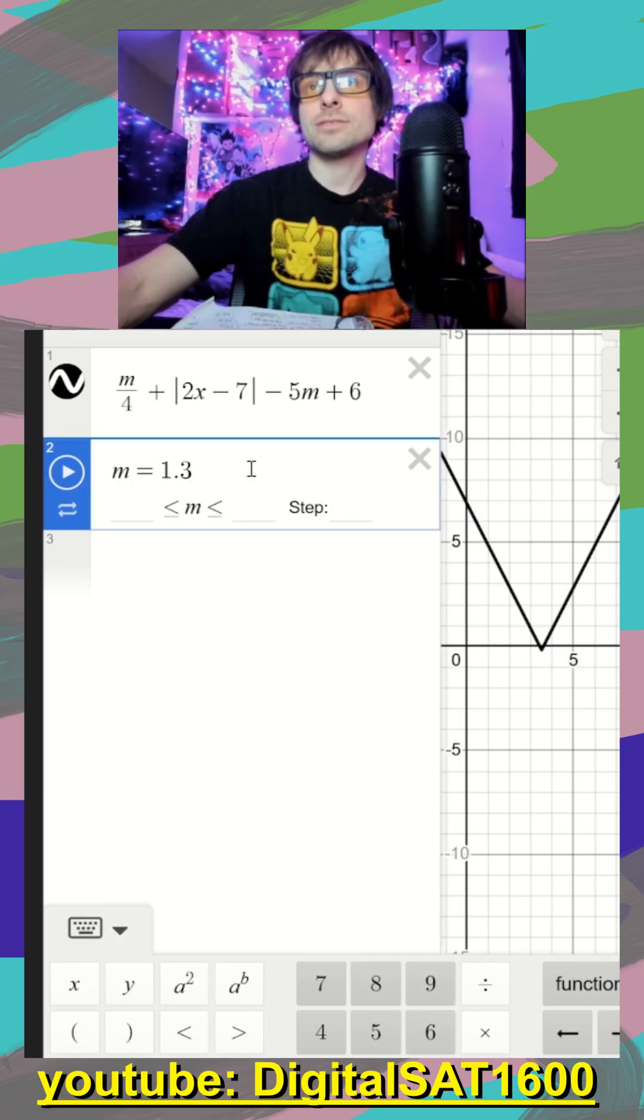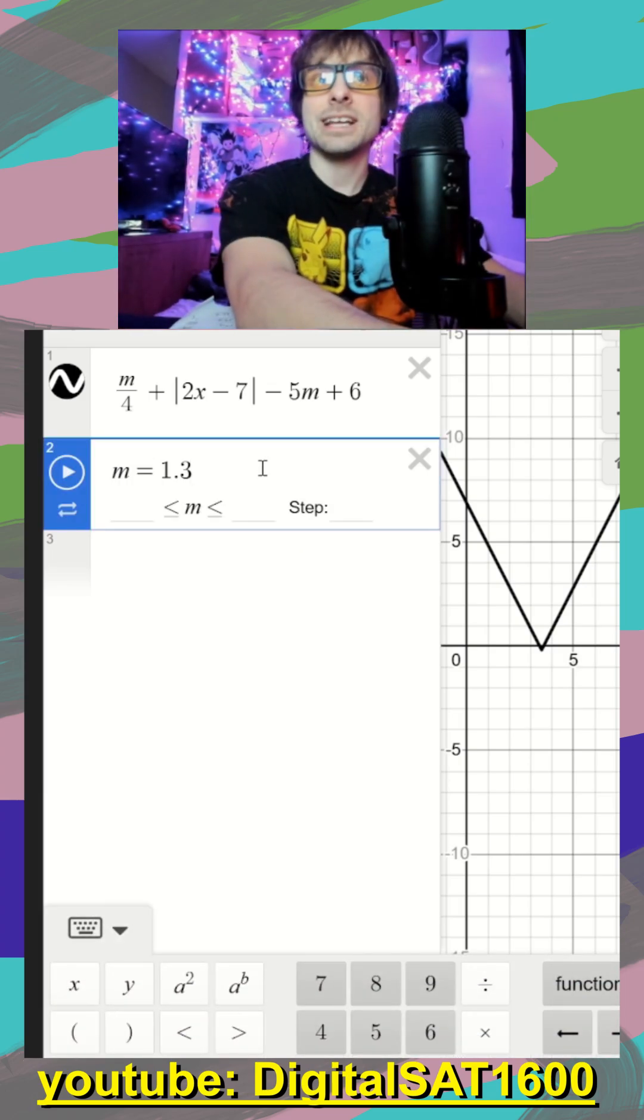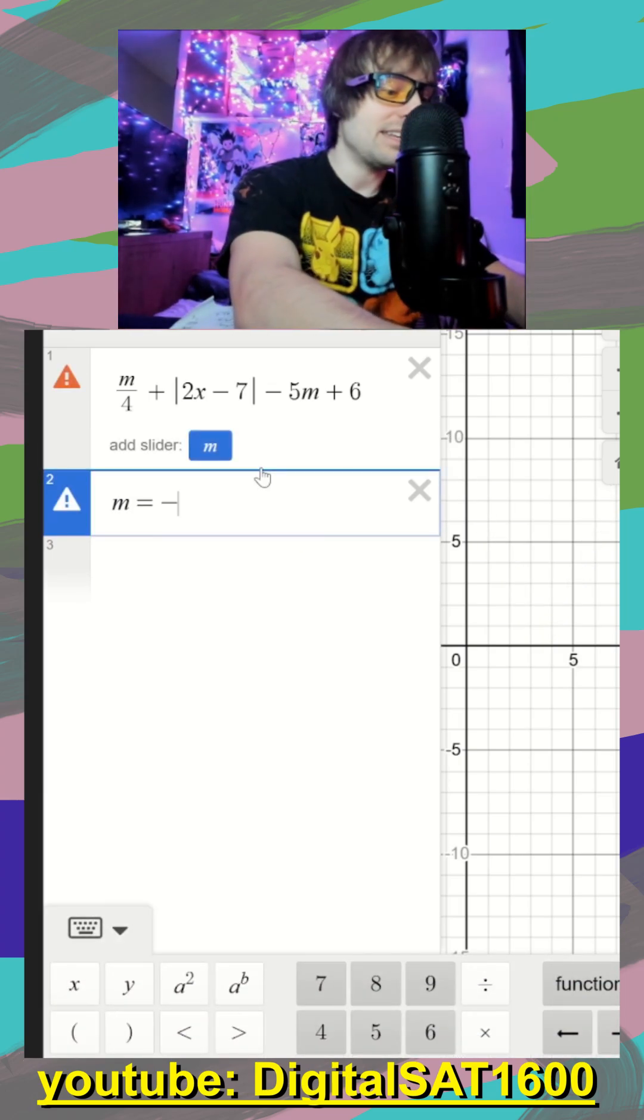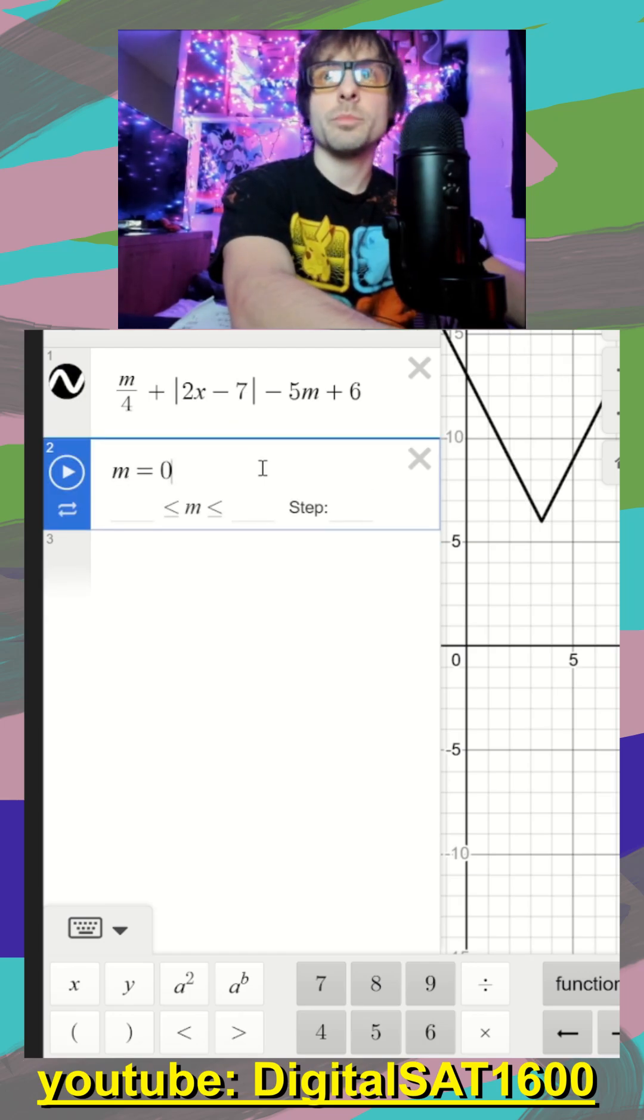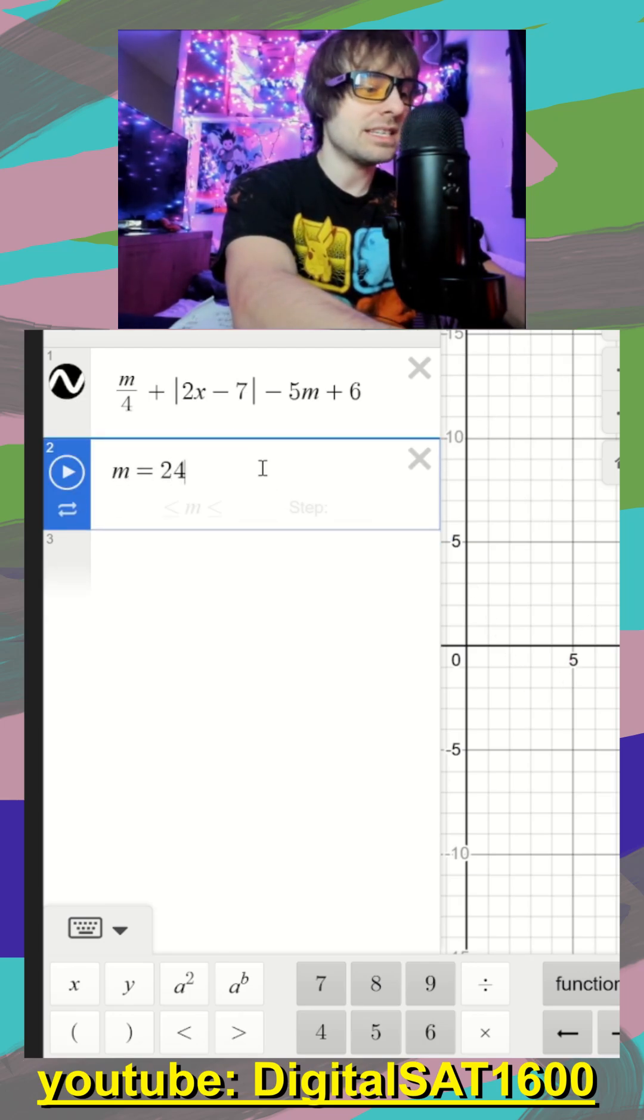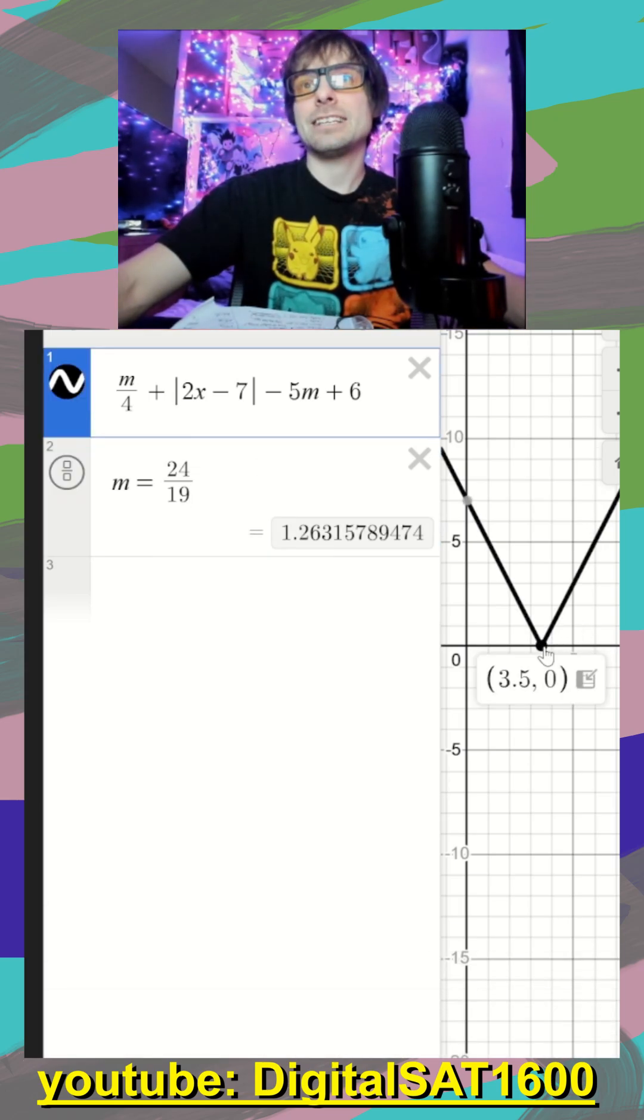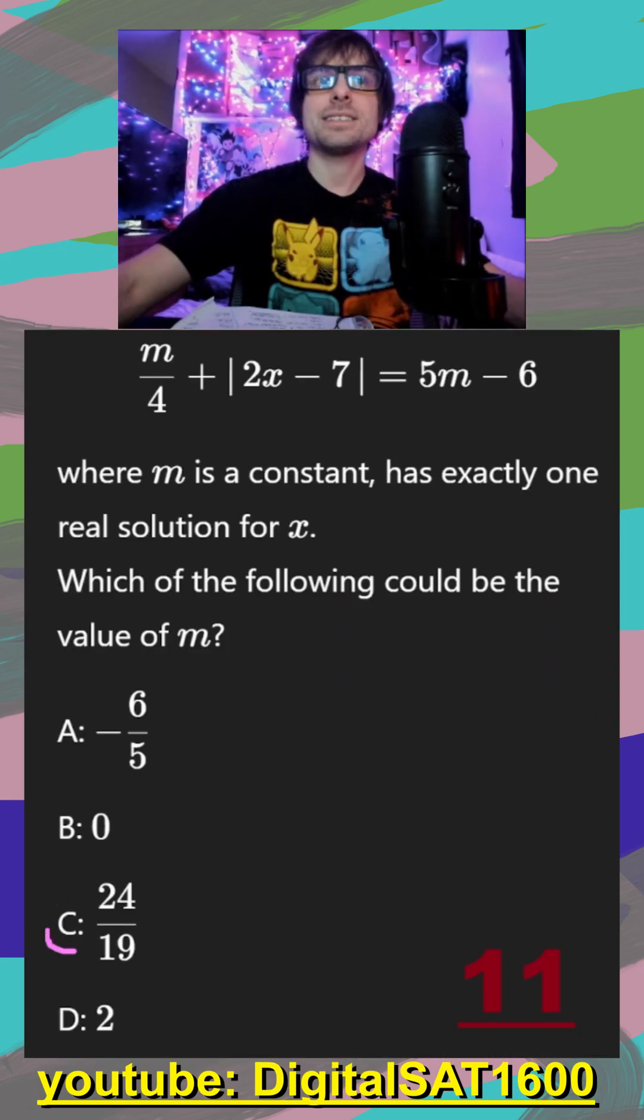What's nice is they did give us answer choices. So we don't have to get down into the decimals here. I can just say, okay, does negative six over five work? It doesn't. Does zero work for B? Nope. And finally, C, 24 divided by 19. It is exactly on there. It's really easy using Desmos this way. It's going to be C here.